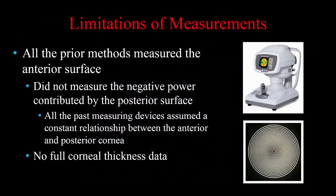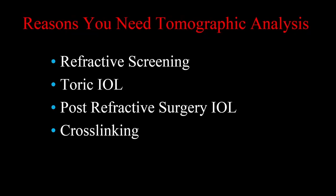So what are the limitations? Most of us know this already. All the prior imaging devices were just limited to the anterior surface. They did not measure the posterior surface. They didn't take into consideration the negative power contributed by the posterior surface. And if you don't measure both anterior and posterior surfaces, you can't generate a full pachymetrical corneal thickness map.